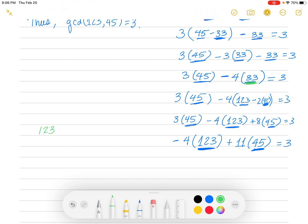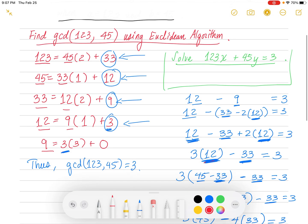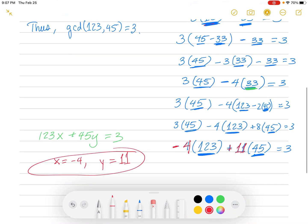So there you have a solution. Double check this and plug it back in. Take negative 4 times 123 plus 11 times 45 in a calculator, and you should get 3. It works. So there's a solution to that. That one's a little more involved than any we've seen so far. That's a good example for you, where you have several levels deep.